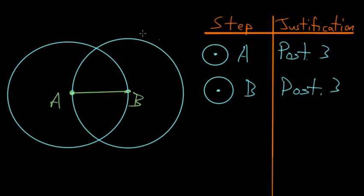And now that we've drawn these two circles, we can notice that they intersect, and we can label one of these points, we'll call it C.